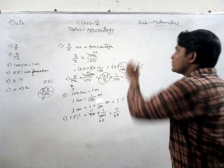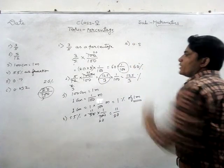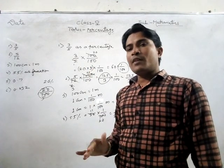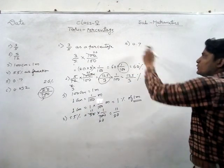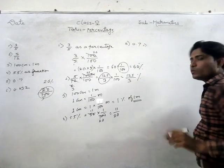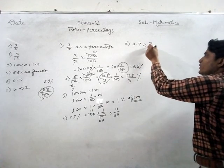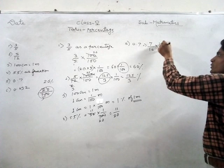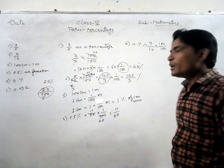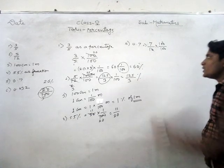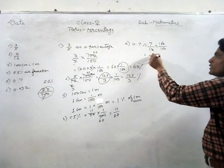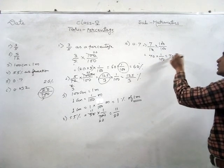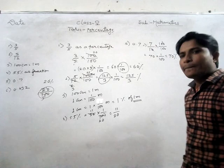The next question is 0.7 - convert this decimal value into a percentage. First we convert the decimal into a simple fraction: 0.7 becomes 7 upon 10. Then we multiply by 100 and divide by 100. Here 10 and the zero in 100 cancel out, so we get 10 into 7 equals 70 into 1 upon 100. Since 1 upon 100 is the percentage symbol, 0.7 equals 70 percent.